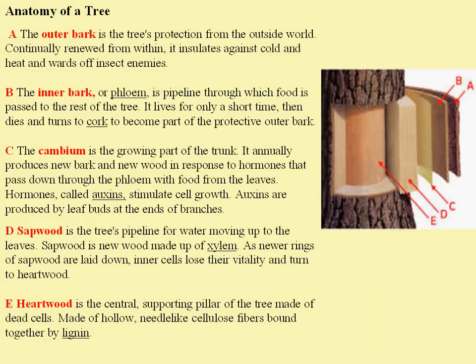The cambium is the actual part of the tree trunk that is growing, and it's constantly producing new bark and new wood. Hormones called auxins control this growth and stimulate cell growth, and these auxins are produced by the leaf buds at the end of branches. Sapwood is made up of xylem, and xylem is responsible for water transport in the tree. Phloem is responsible for food, or the starches, and xylem is responsible for water transfer. The last layer is the heartwood, which is the central supporting pillar of dead cells made of hollow fibers bound together by lignin.